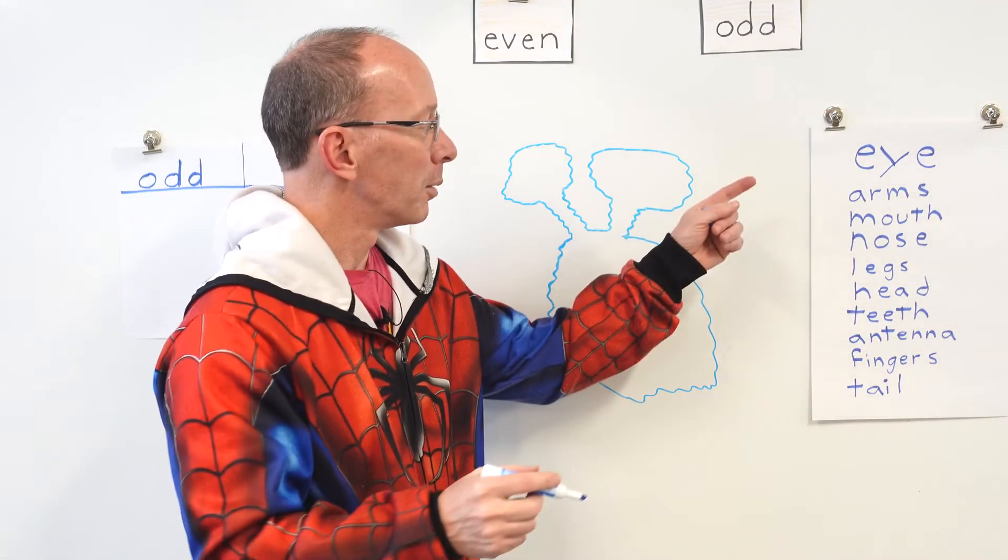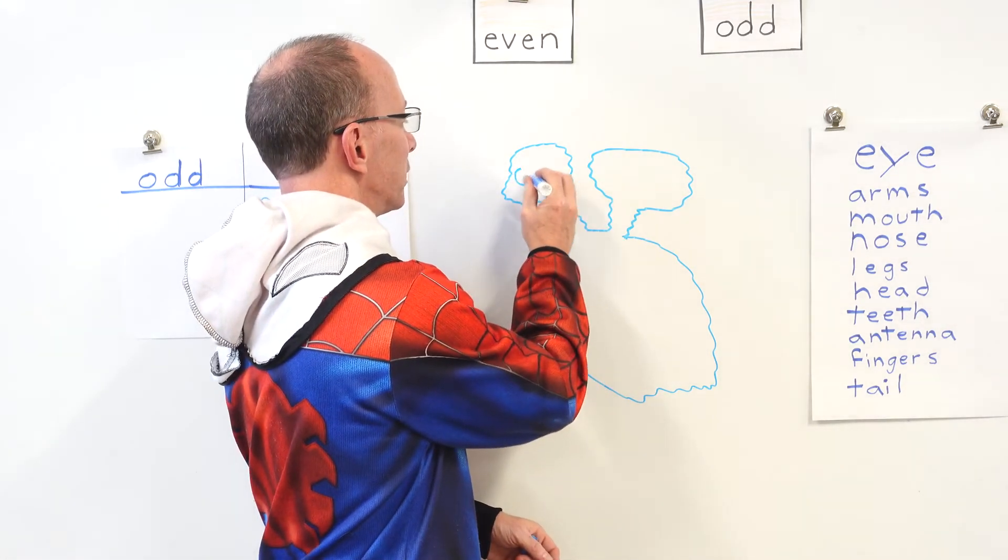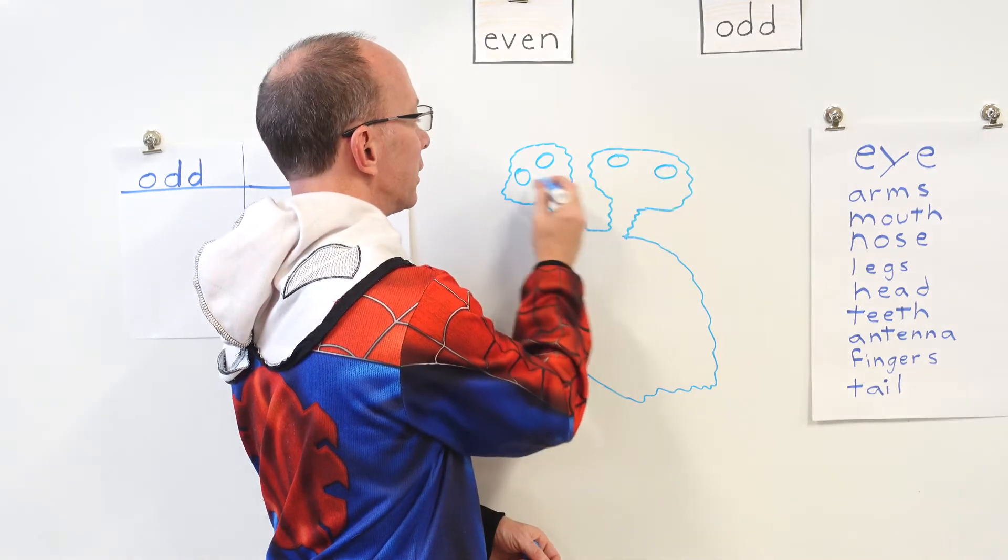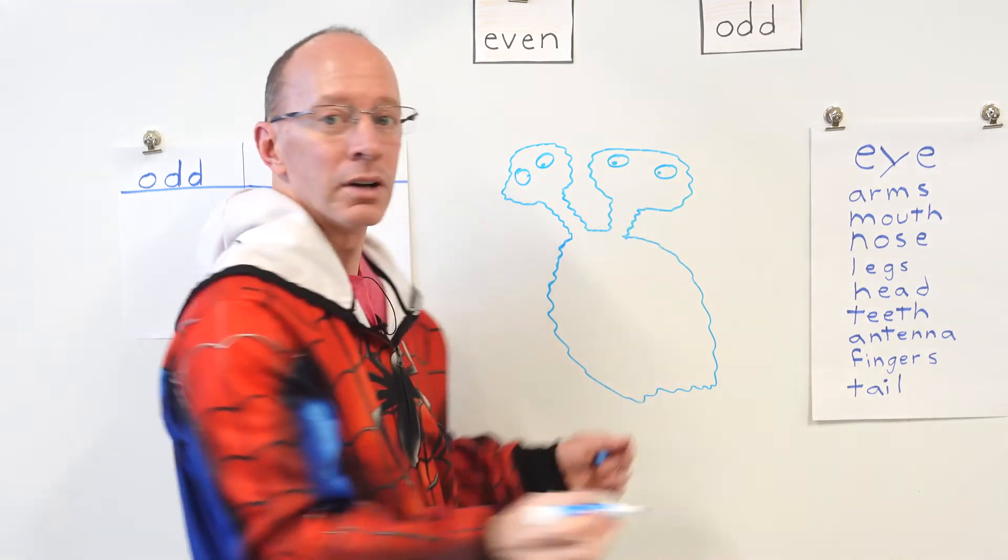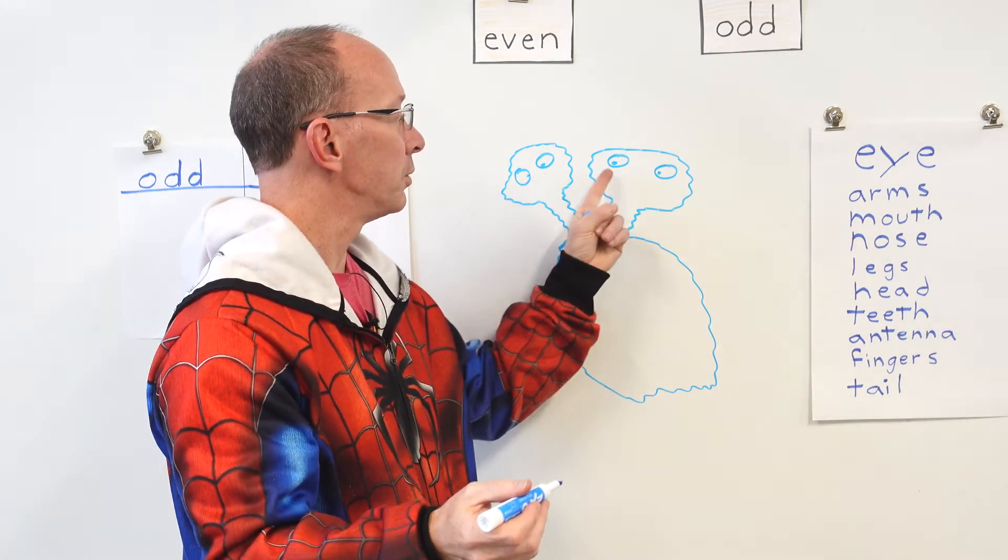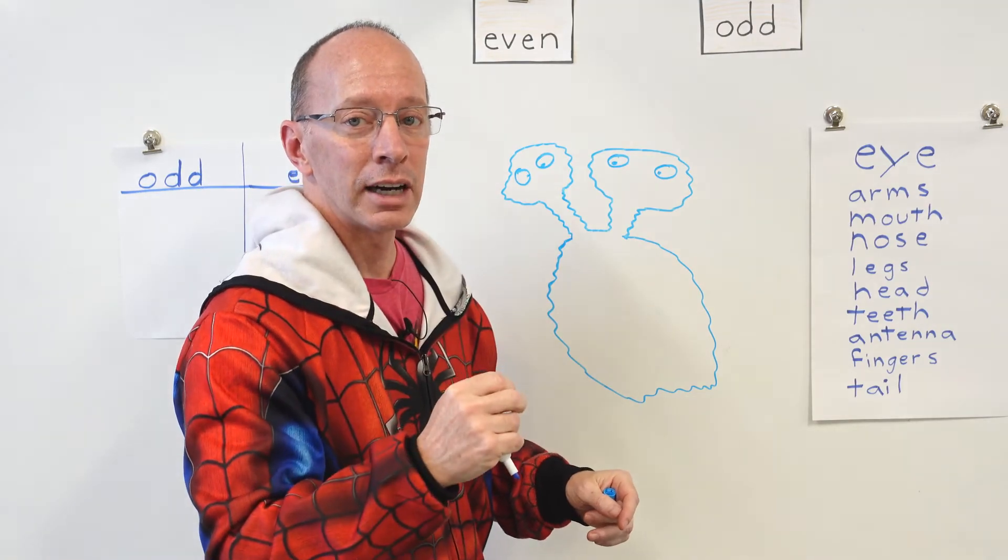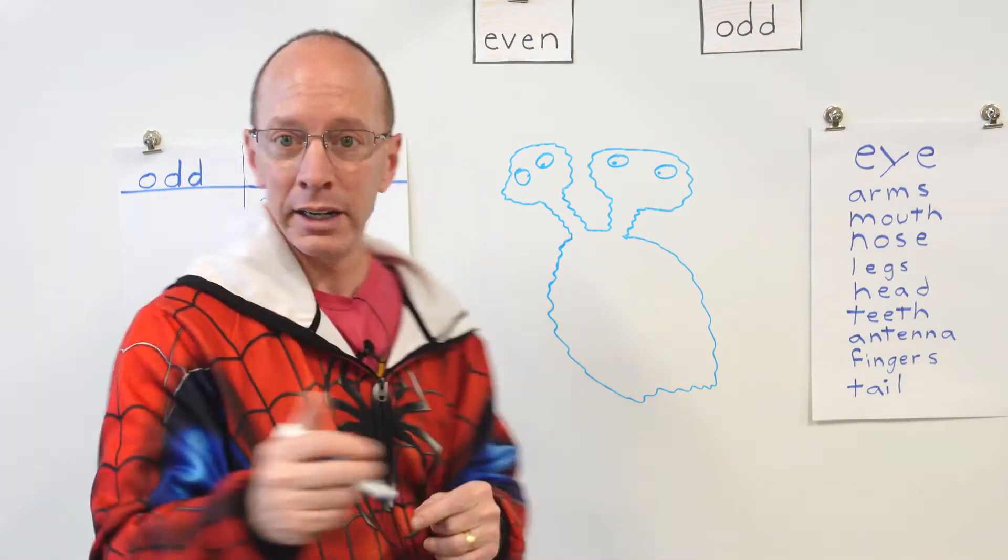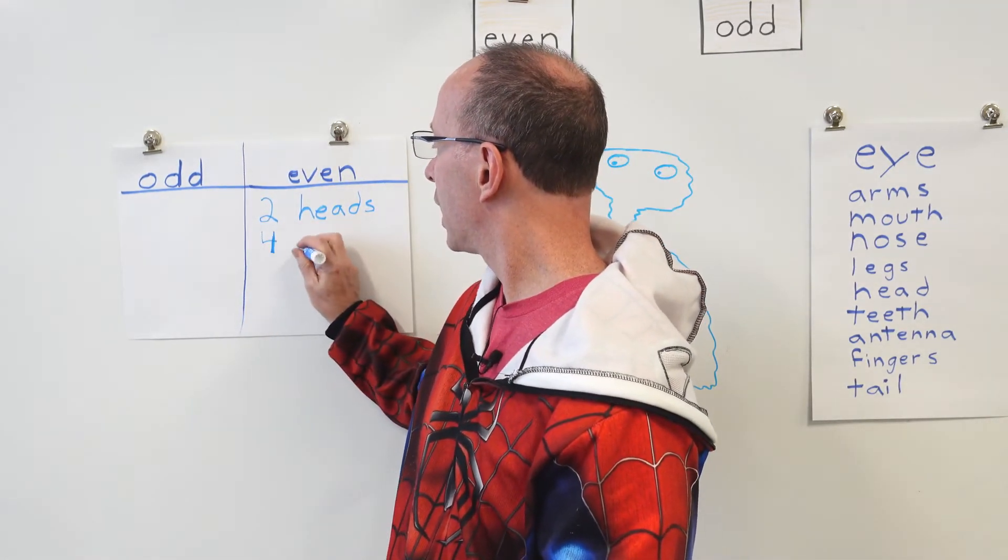So right now I'm going to put some eyes on there. So I'm going to put an eye here and an eye there, eye here and an eye there. Put some pupils looking at each other. So let's count how many eyes I have. I have one, two, three, four. Quatro. Is that even or odd? You're right. That is even. So I'm going to put right here. Boom. Four eyes.